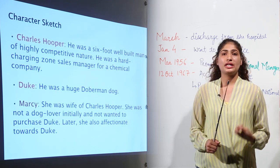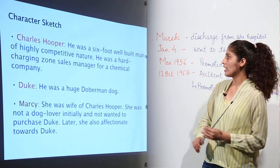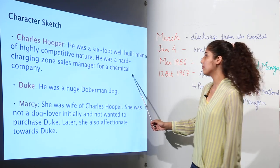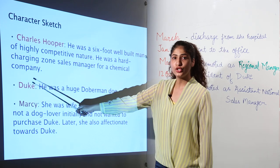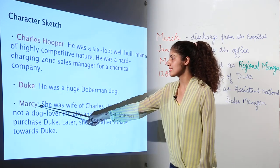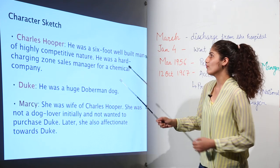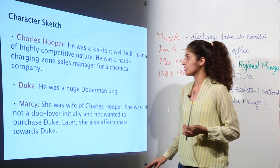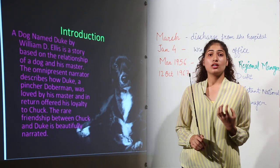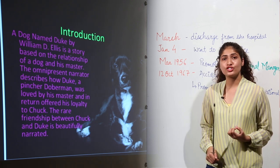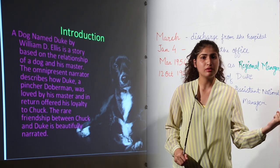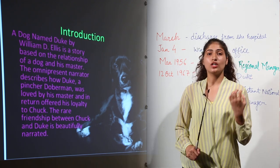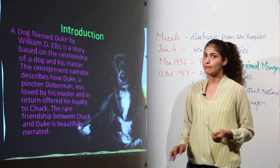This fiction deals with three living beings. One is Charles Hooper, a man who works as a sales manager for a chemical company. Second is Duke, a dog. Third is Marcy, the wife of Charles Hooper — Charles Hooper is also known as Chuck. This fiction gives a perfect example of the friendship between a human being and an animal, and also illustrates the loyalty of an animal towards its master.